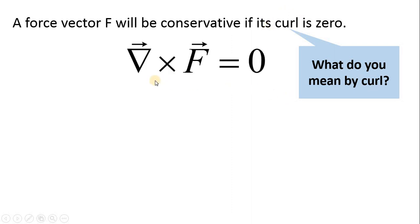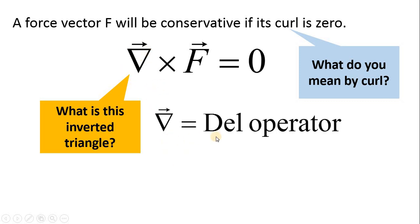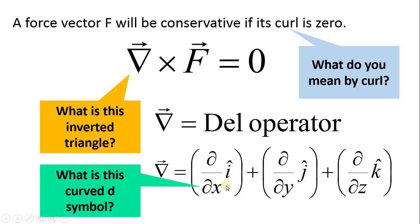The del cross F equals zero condition uses the del operator — the inverted triangle symbol. This mathematical operator is expressed as: partial differentiation with respect to X times î, plus partial differentiation with respect to Y times ĵ, plus partial differentiation with respect to Z times k̂. The curved-D symbol represents partial differentiation, which is different from ordinary differentiation.